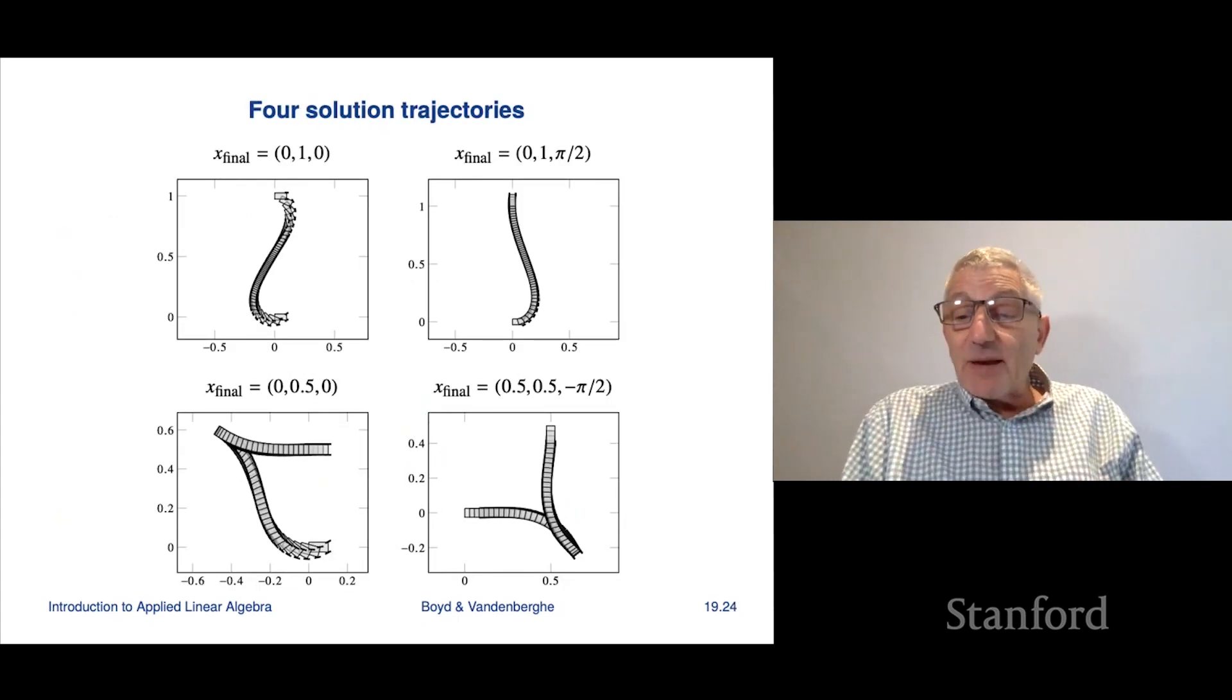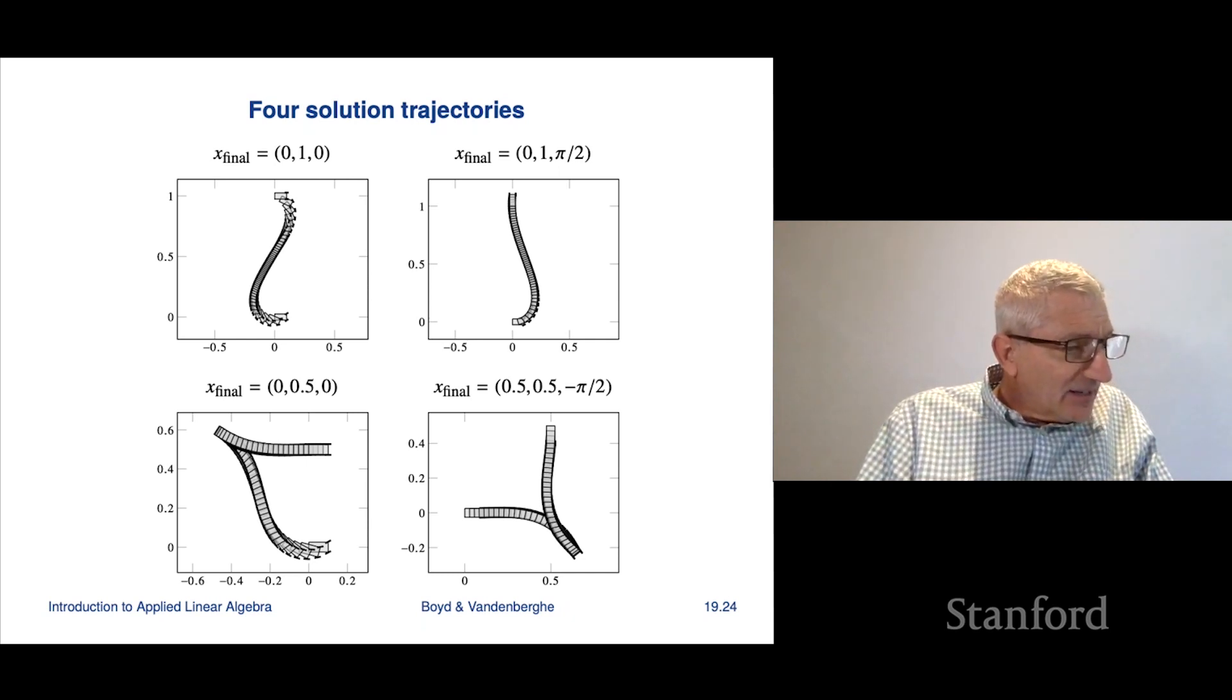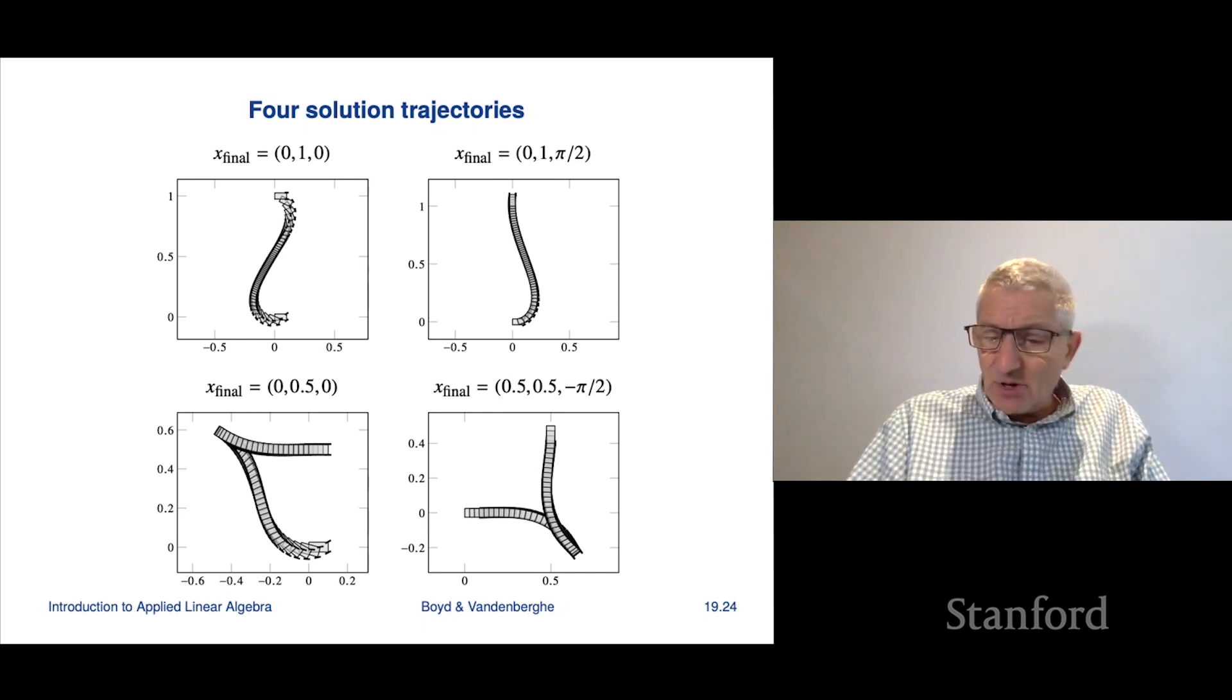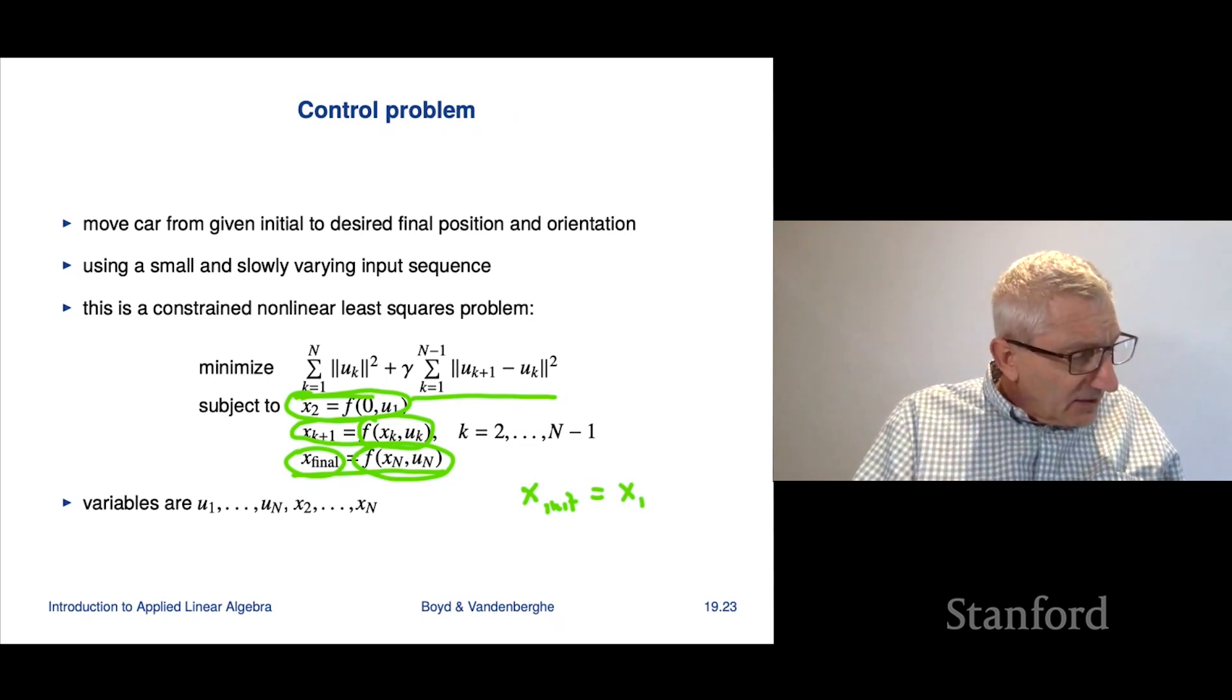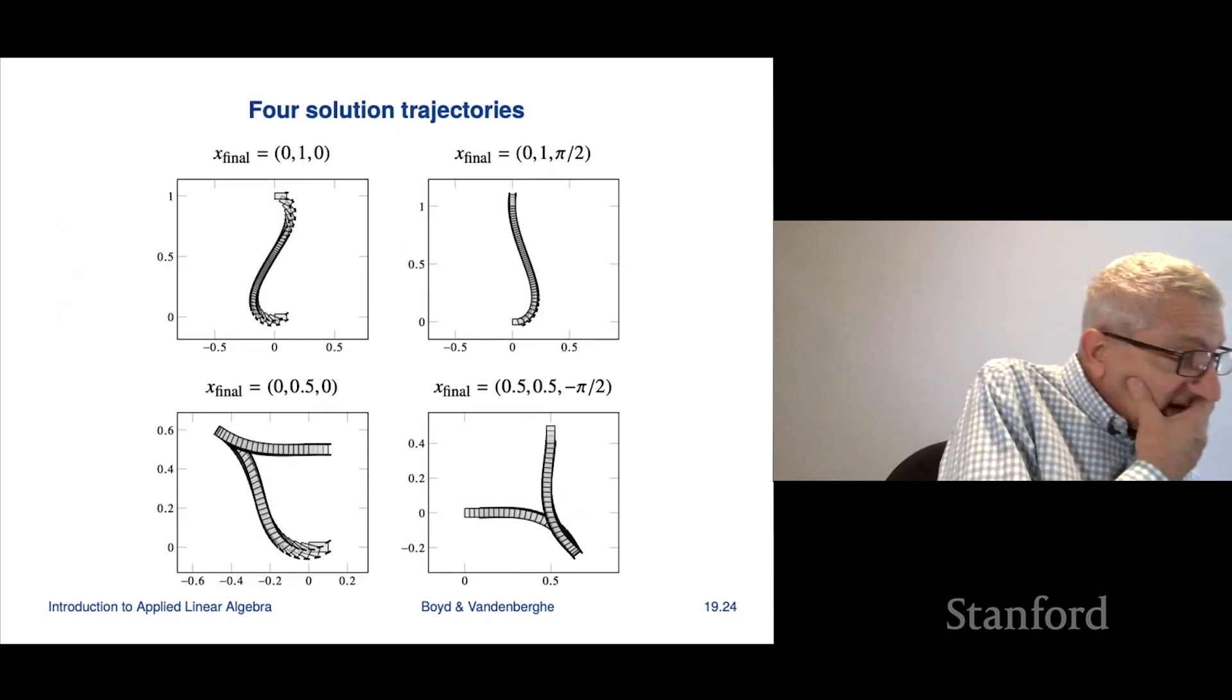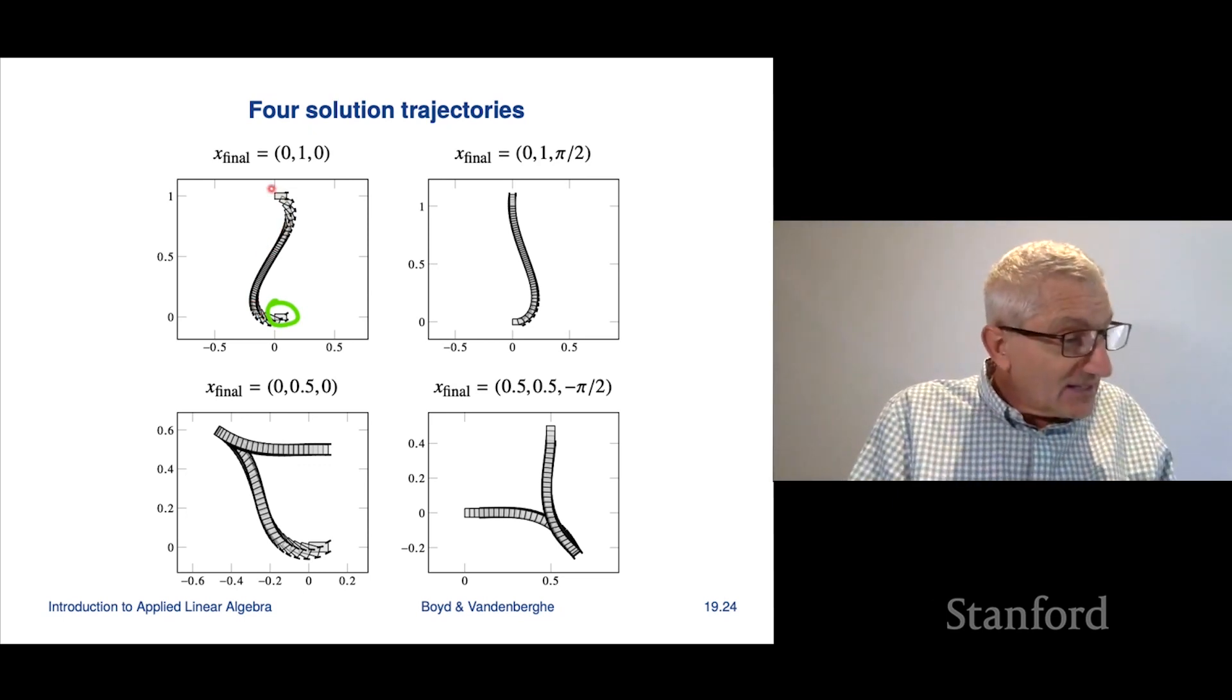Now we'll look at a control problem. And the problem is to move the car from a given initial to a desired final position and orientation. And we also want a small and slowly varying input sequence, right? So we don't want gigantic speeds and things like that. We also don't want the speed or the steering angle to change abruptly. So we want that smooth. And so we'll make this a constrained nonlinear least squares problem. We're gonna minimize the sum of the norms of u squared plus gamma times a smoothness constraint on u. This is nice. That's—this thing is completely linear least squares or something like that. And now we have the constraints which are not linear. And they are—we insist that the final state, that the final one has to equal this thing. And we would have here f of—this says—this is the state equation, right? This says that xk plus 1 is f of xk, u k. And here we're starting from this. This should say that the initial state should be x init. That's—I suspect what that is supposed to say. So that should be x init equals and then x1. I suspect I'm not quite sure what that is.